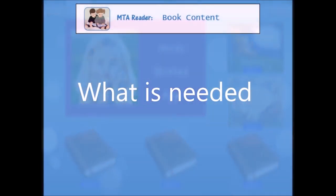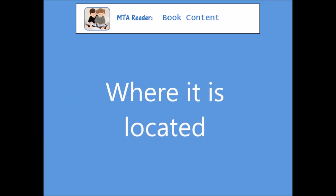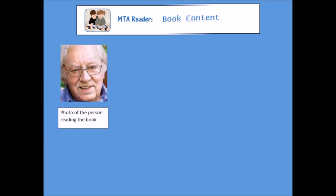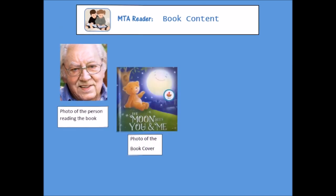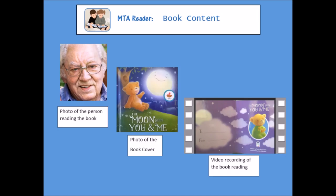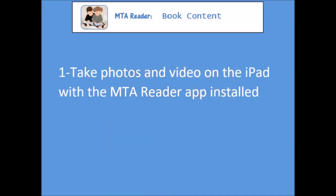To get started, we're going to take a look at what is needed and where it's located. First, we're going to need a headshot photo of the Reader, a photo of the book cover, and a video recording of the book reading. These three items have to be located in the photo albums of the iPad with the Reader app, and there are basically two ways to get those items into your photo album.